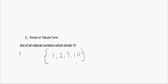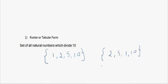The first important property of the roster form is that the order is immaterial. For example, I wrote {1, 2, 5, 10} in increasing order, but I could have easily written {2, 5, 1, 10} — both represent the same set. The order in which you write elements does not matter; the only important thing is that you represent each and every element of the set.